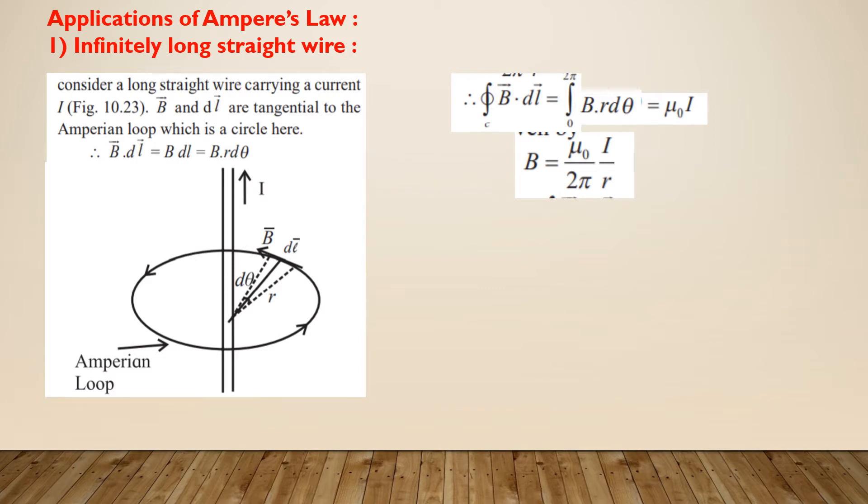Applications of Ampere's law. Let us apply the law to determine the magnetic field due to an infinitely long straight wire at a point P situated at a perpendicular distance R from it. For that, let us consider the Ampere's loop in the form of a circle of radius R passing through the point P with the wire as its center.